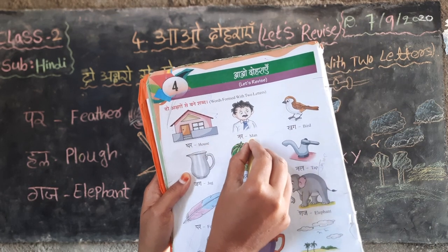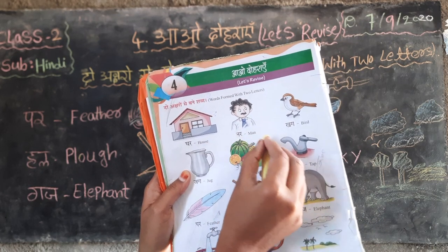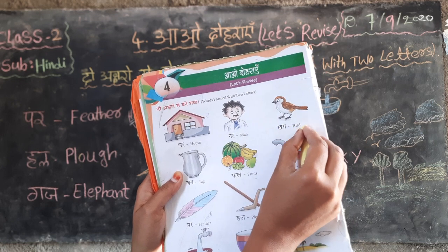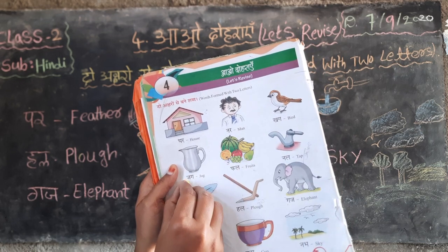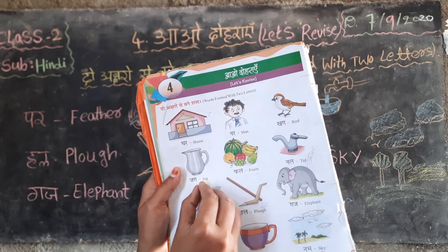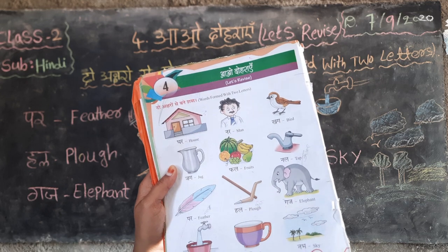Nar — M-A-N, man. Khag — bird, B-I-R-D, bird. Jag — J-U-G, jag.